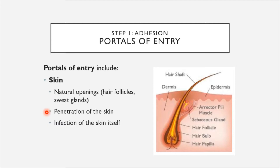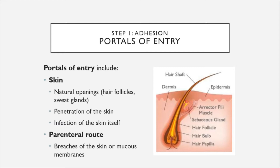Some microbes can penetrate skin even without natural openings — for example, hookworm can burrow through the skin surface. Other microbes infect the skin itself without needing to enter deeper into the body; ringworm is an example, appearing as a red spot on the skin surface. There is also the parenteral route, which describes microbes entering through breaches of the skin or mucous membranes — through cuts, scrapes, or stabs. Some pathogens have a preferred portal of entry; for example, Streptococcus pneumoniae causes disease through the respiratory mucous membranes but is harmless in the gastrointestinal tract.